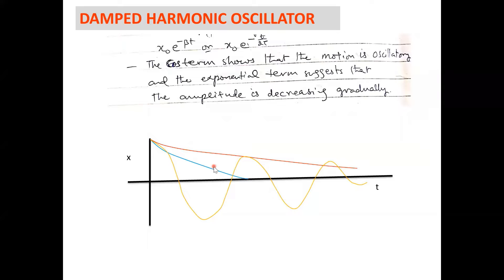Now we have all three cases in graphical form. Critical damping returns the system to equilibrium as fast as possible. An under-damped system will oscillate through the equilibrium position. An over-damped system moves more slowly towards equilibrium than one that is critically damped. This is exactly the difference between all three cases.